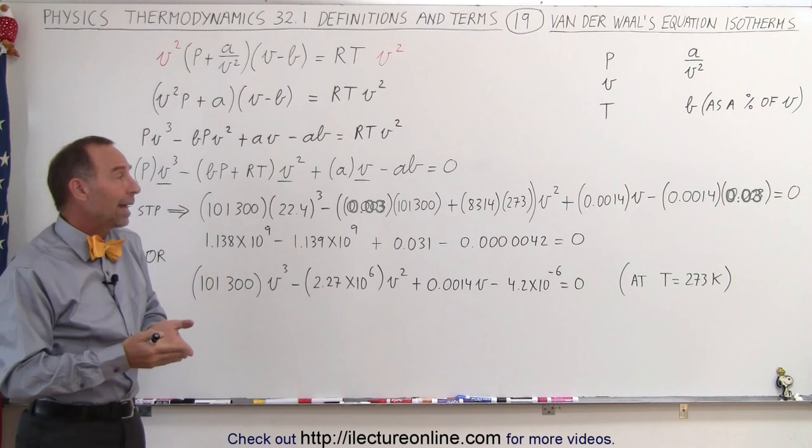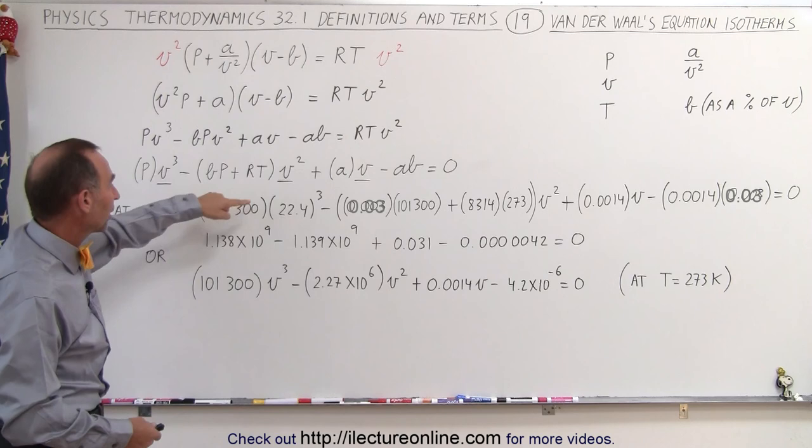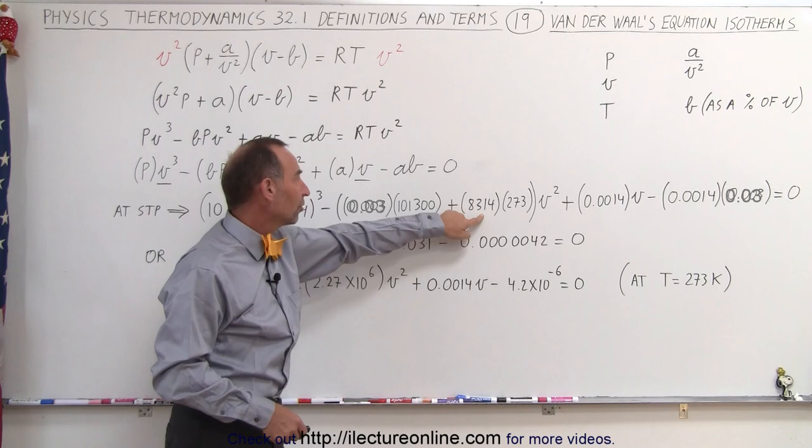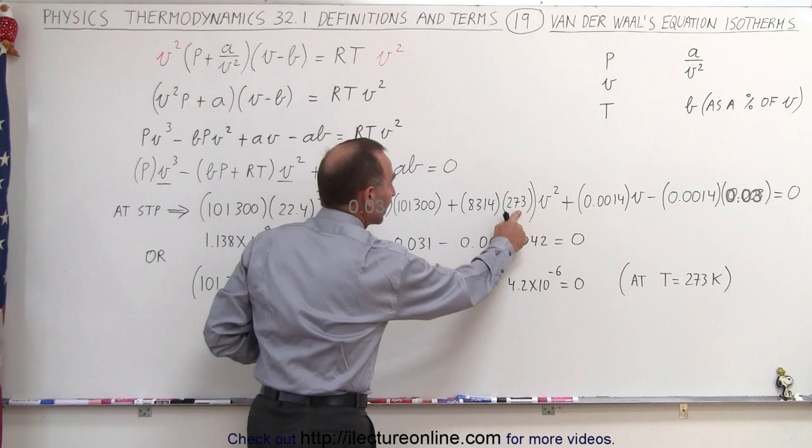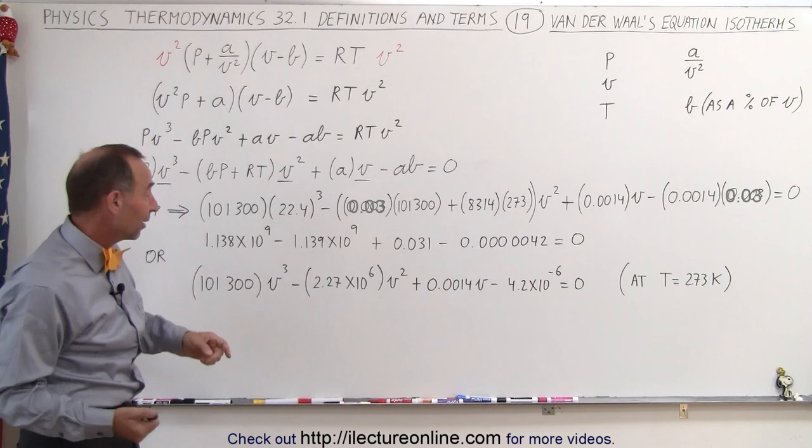Now if we plug in some values at STP conditions, standard temperature and pressure, we can see that when we plug in these various values: 22.4 cubic meters per kilojoule, this is the constant R in terms of kilojoules, and then the temperature, 273 Kelvin at STP conditions, and so forth.